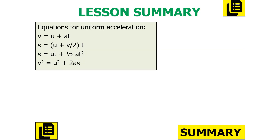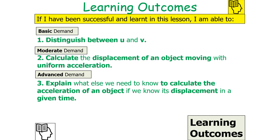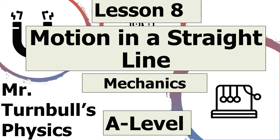To summarise, the equations for uniform acceleration are: V = U + AT; S = (U + V)/2 × T; S = UT + ½AT²; and V² = U² + 2AS. Having completed this lesson, we should be able to distinguish between U and V, calculate the displacement of an object moving with uniform acceleration, and explain what else we need to know to calculate the acceleration of an object if we know its displacement in a given time. Thank you very much for watching this lesson on motion in a straight line, part of the mechanics topic in AQA A Level Physics.